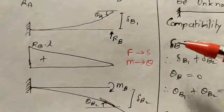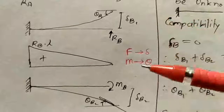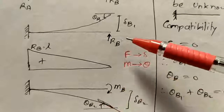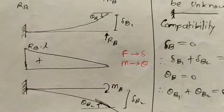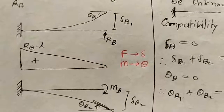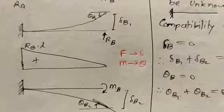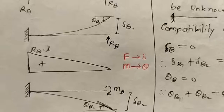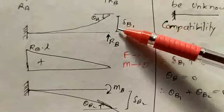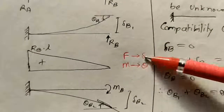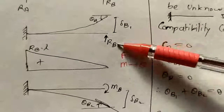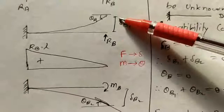For the governing deformation of RB, we consider displacement; for MB, we consider rotation. The sign convention is: deformation in the direction of the unknown is taken as positive. RB is the unknown, and because of it we are getting upward displacement, so we take this as positive — delta B1 is positive.